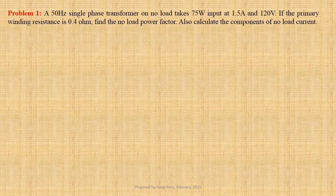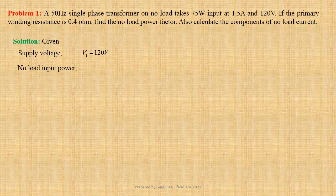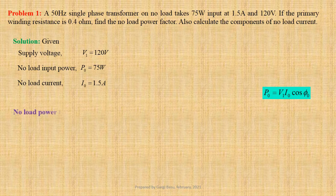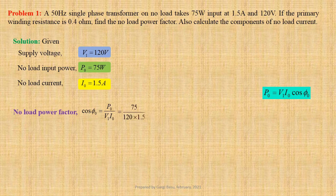Let us first jot down the given data. Supply voltage V1 equals 120 Volts. No load input power P0 equals 75 Watts. No load current I0 equals 1.5 Ampere. No load input power P0 equals V1 I0 cos phi 0. Expression for no load power factor cos phi 0 equals P0 divided by V1 into I0. Using values we get 75 divided by 120 into 1.5, that gives us 0.4167 lagging.